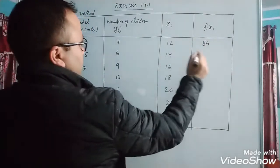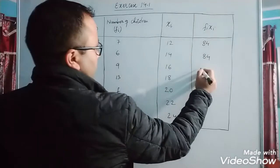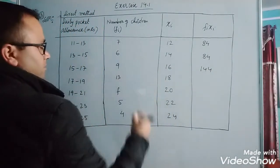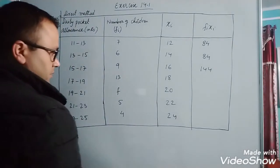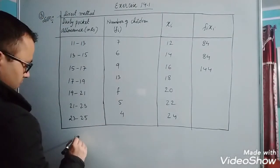9 into 16 is 144. Now 13 into 18 is 180 plus 54, which equals 234.